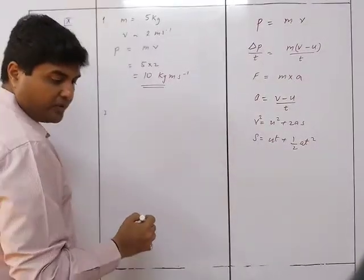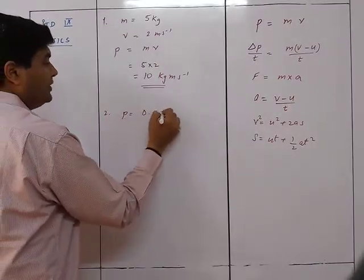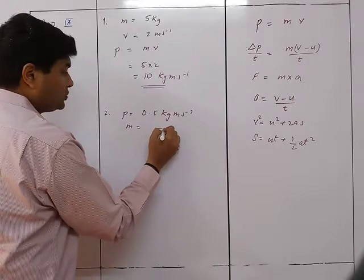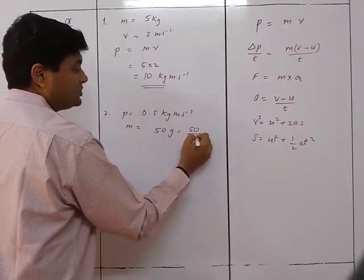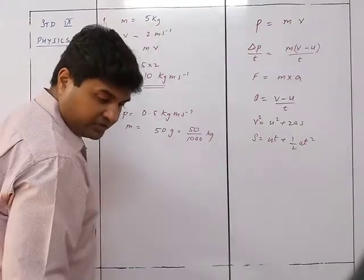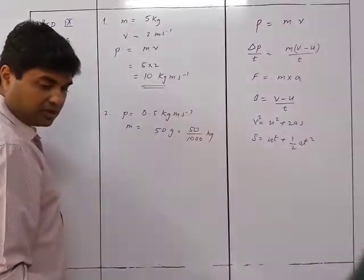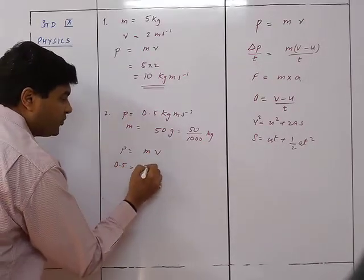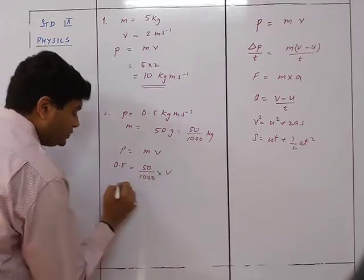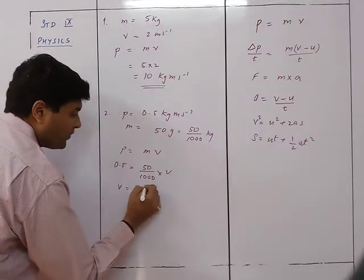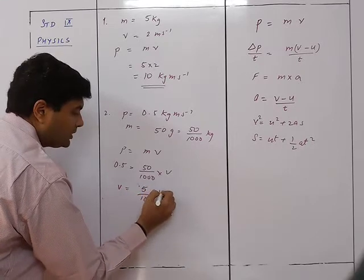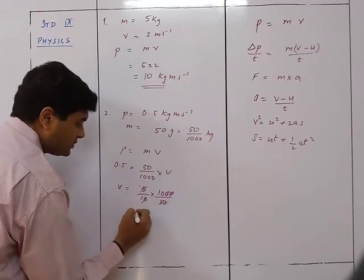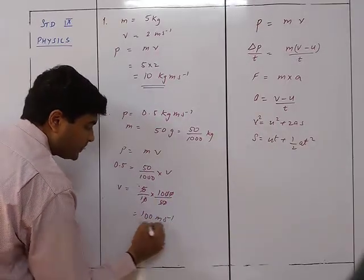Question 2: The linear momentum of a ball is 0.5 kg meter per second and its mass is 50 grams, which is 50 upon 1000 kg. We need to find velocity. Using p equals m times v: 0.5 equals (50 upon 1000) times v, giving v equals 10 meter per second.